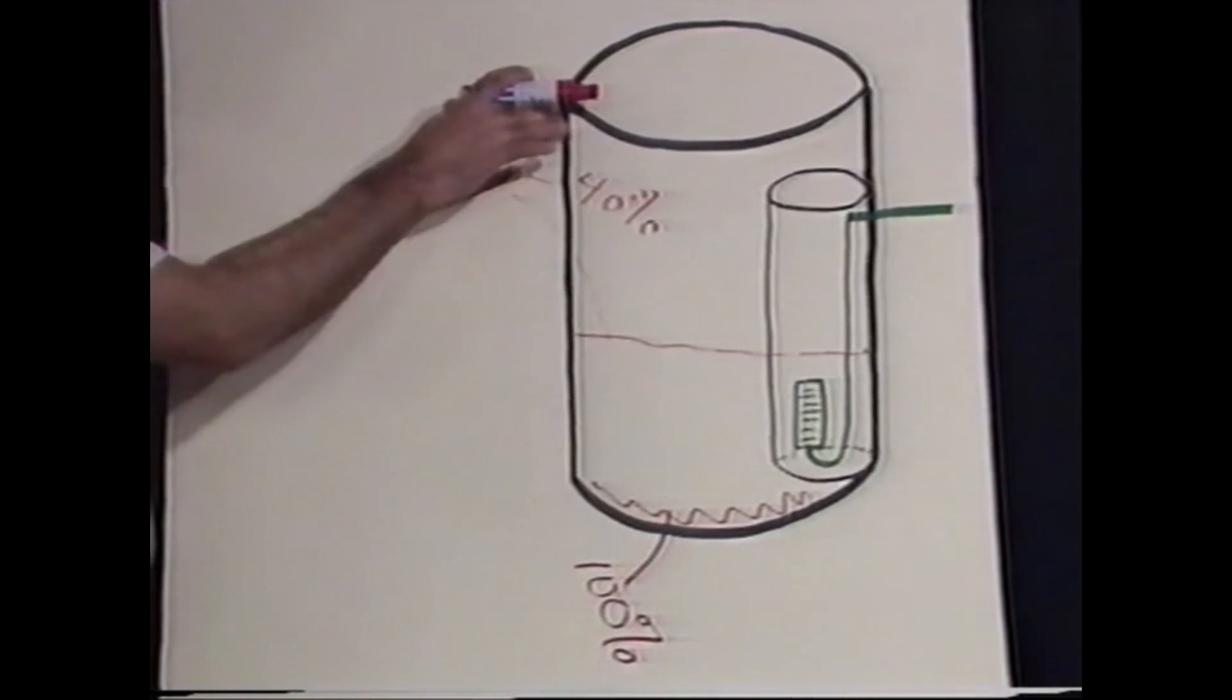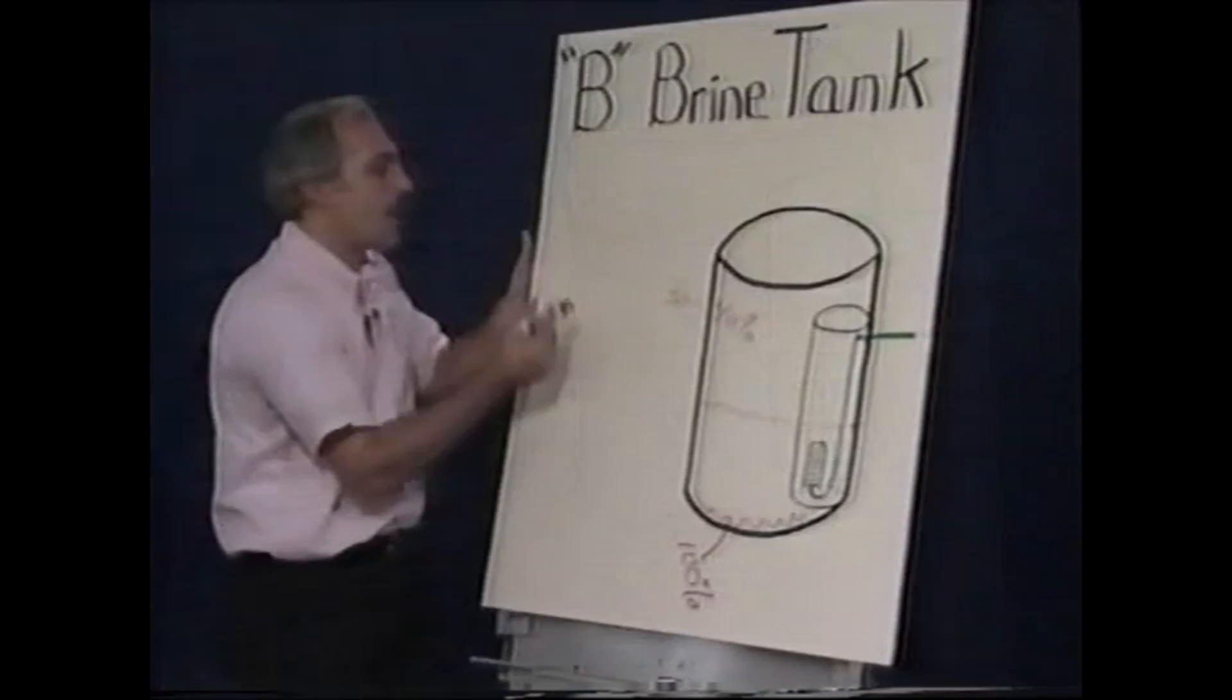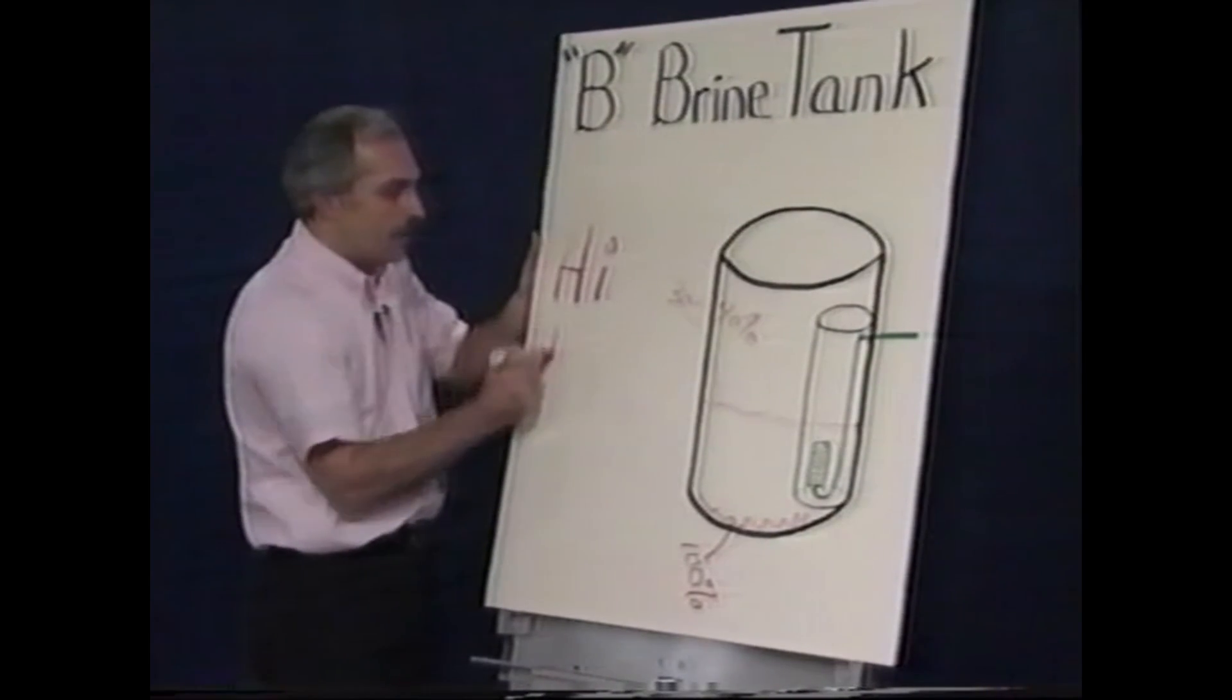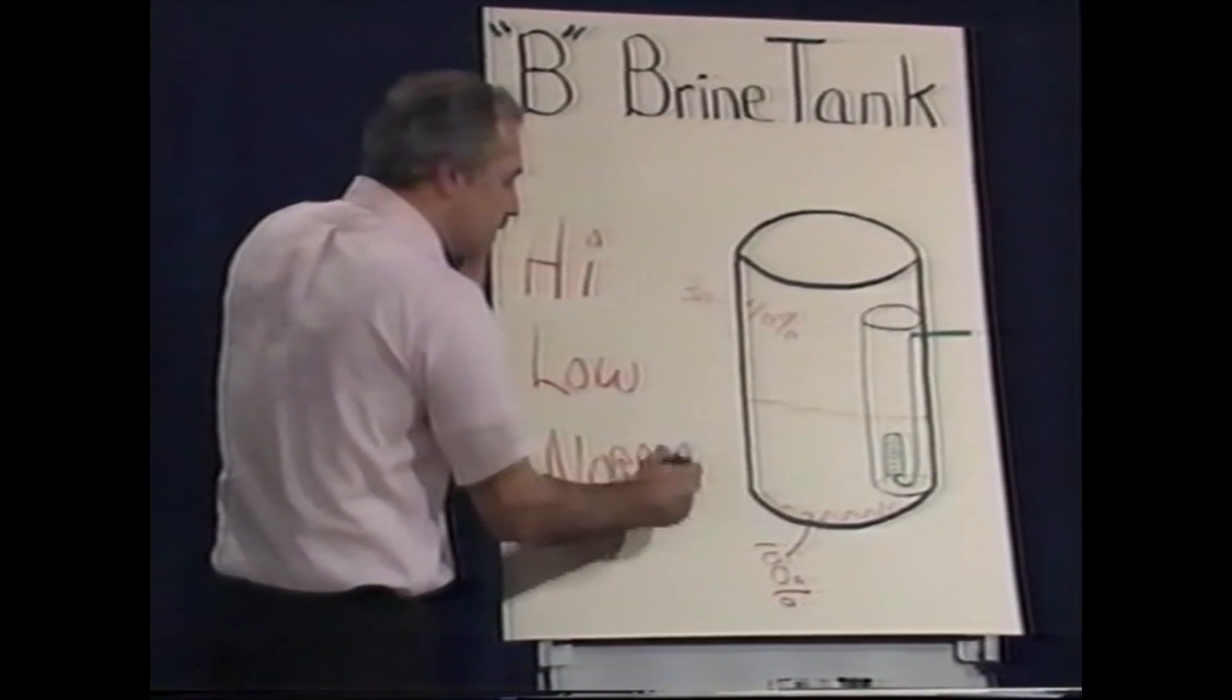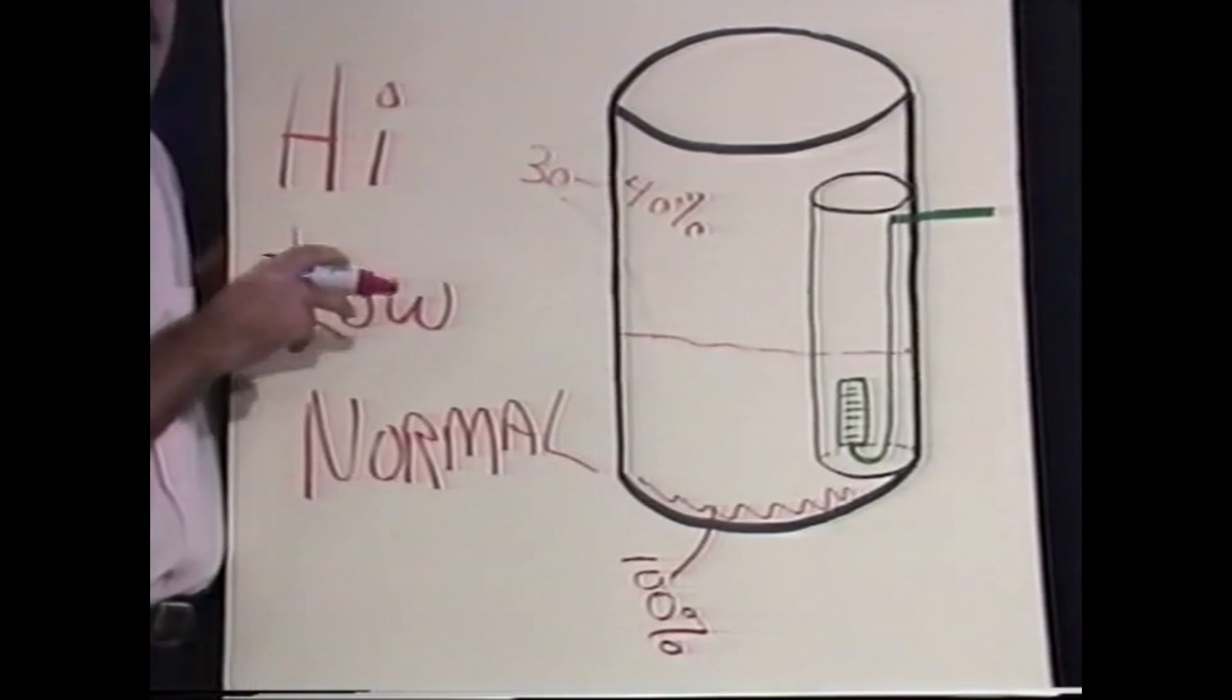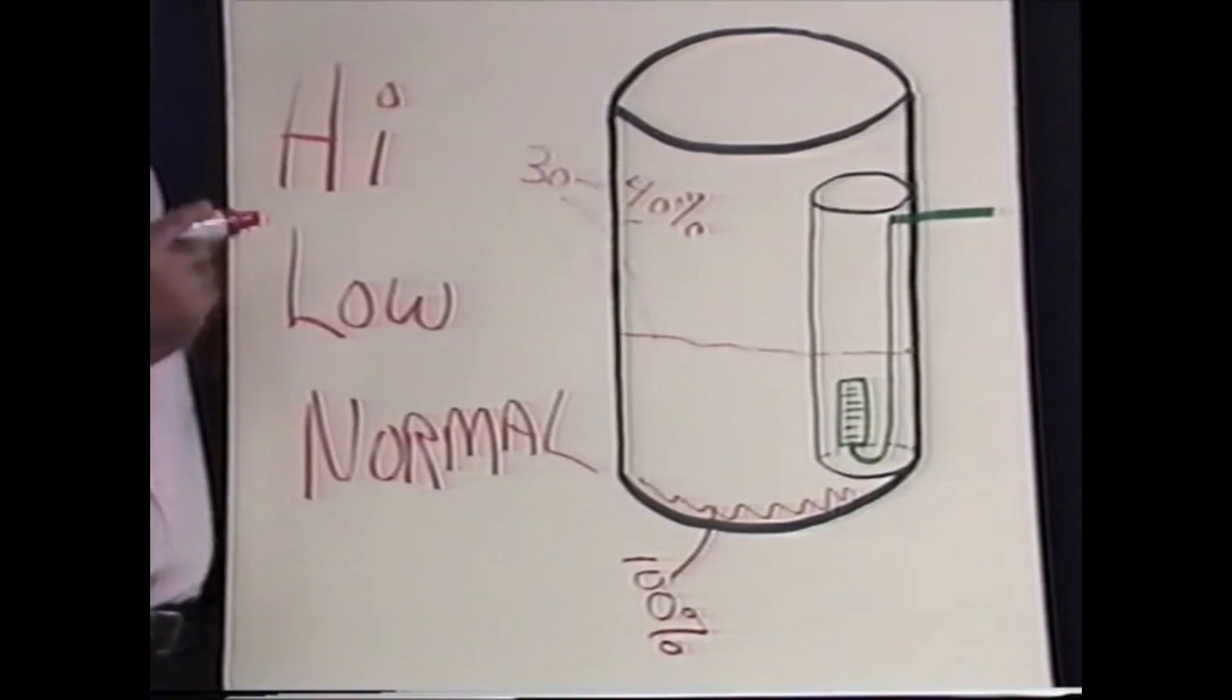When you pull the lid off the tank, you're going to find one of three conditions with this water level in the brine tank: either that water level is going to be extremely high, very low, or normal. Let's say you find the level of the water in the brine tank very high or overflowing, maybe up to this level here.